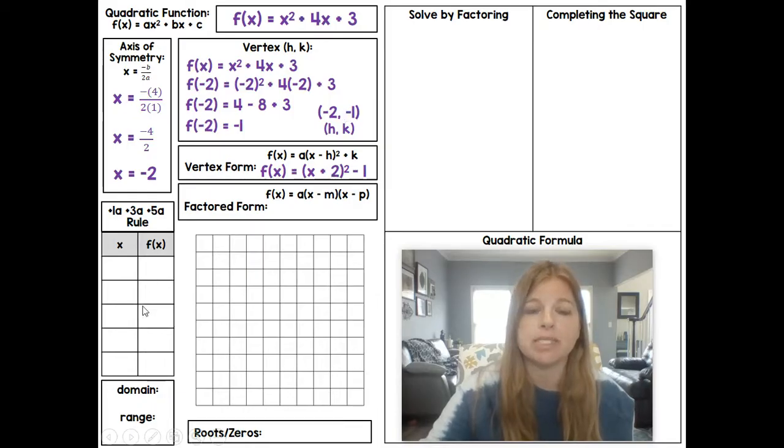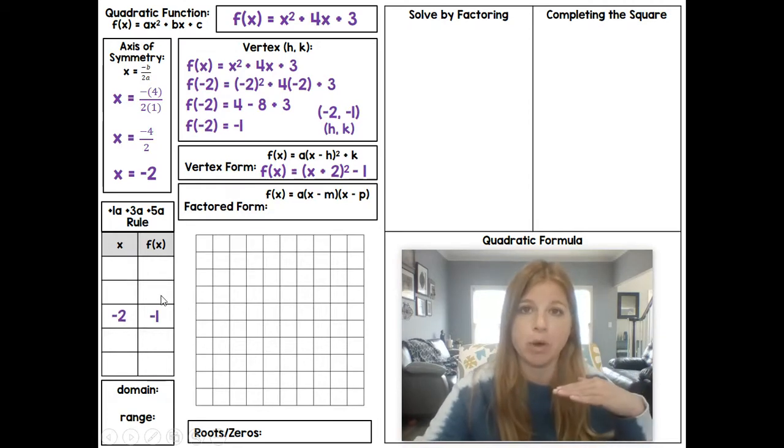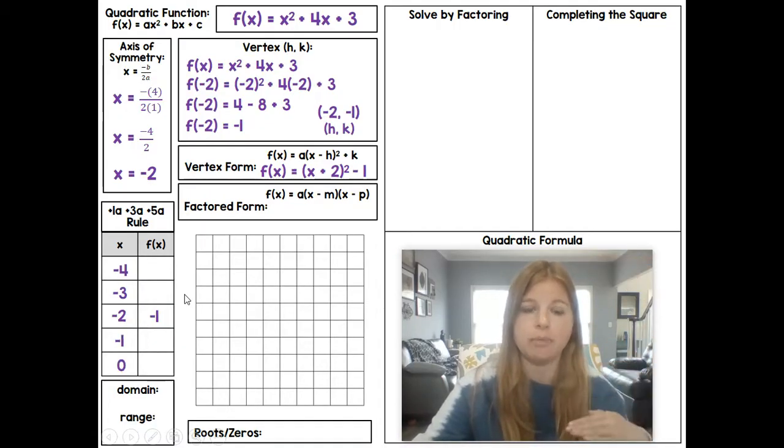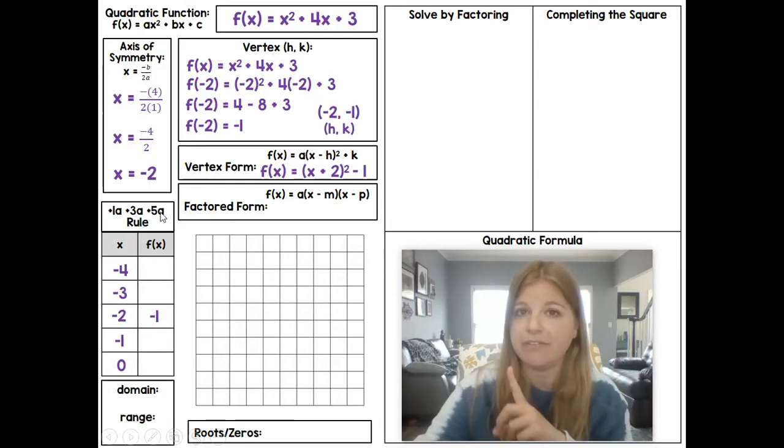Remember, the vertex goes in the center of the table. So (-2, -1) goes right in the middle of the table here. And then remember, we fill in the x values by 1. So I'm going to subtract 1 going up and then I'm going to add 1 going down. We then have this +1a, +3a, +5a rule. And the rule is when a is 1, you simply add 1, add 3, add 5. And we don't even need to get to the add 5 at this point.